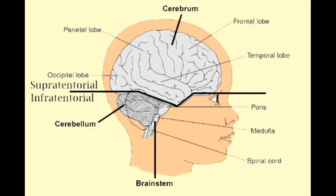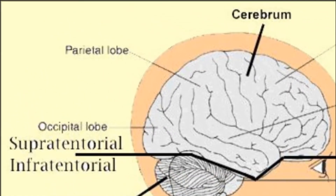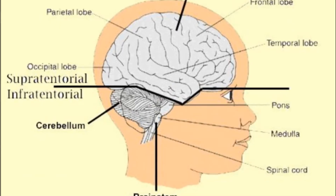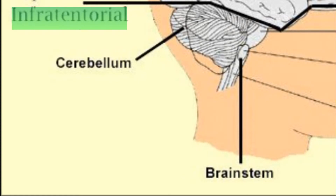Before we move on to the primary tumours, you need to know what is supratentorial and infratentorial. Draw a line between the telencephalon and the rest of the brain, which is the cerebellum and the brainstem. Above this plane, just with the cerebrum and its contents, will be supratentorial. Below this level will be the cerebellum and the brainstem — that is the infratentorial.